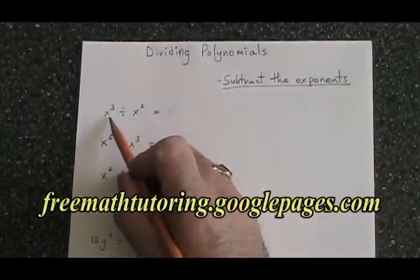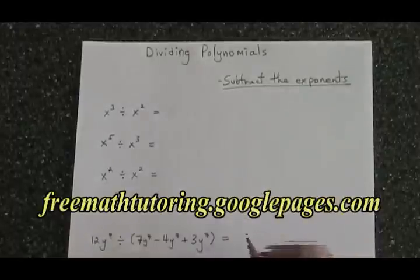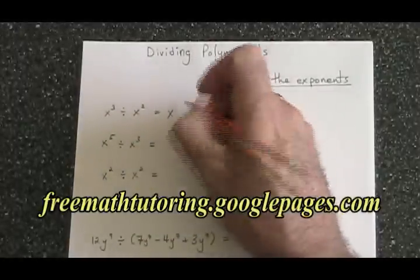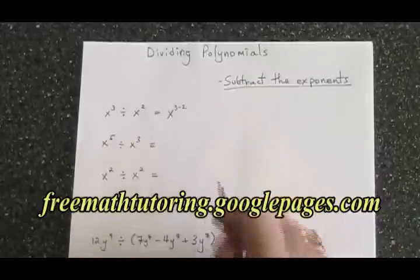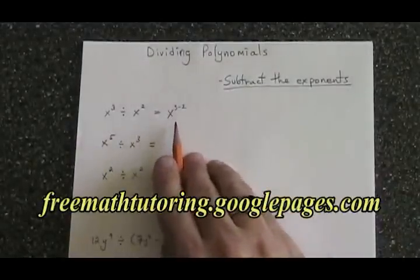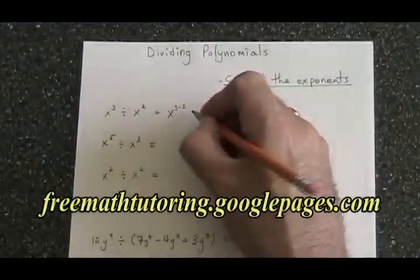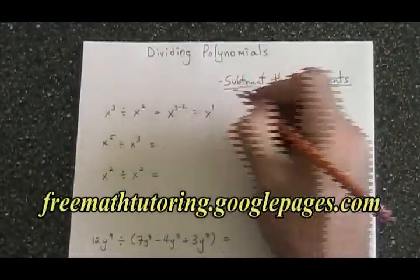Here we have x cubed divided by x squared. I'm going to write this as x to the power of 3 minus 2. So I'm showing that I'm subtracting the exponents. 3 minus 2 is 1, so therefore the answer is x to the 1.